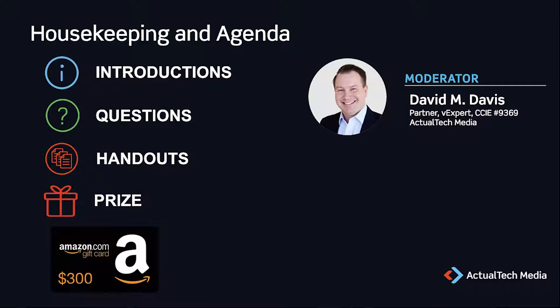Of course, we want this to be educational. Experts from Druva are standing by to answer your questions, so we encourage your questions there in the questions box. We'll be doing a Q&A session as well during the event, so get your questions in early. We have an Amazon $300 gift card we'll be announcing at the end of the presentation to one lucky attendee on the live event. The prize terms and conditions can be found in the handouts tab.